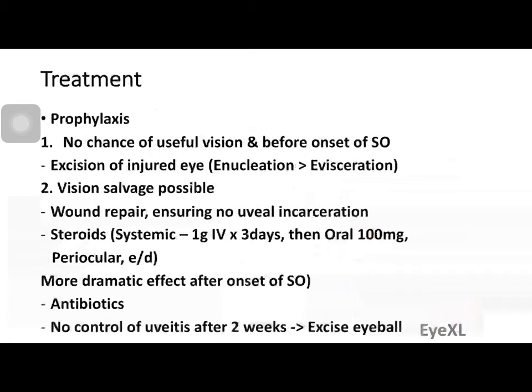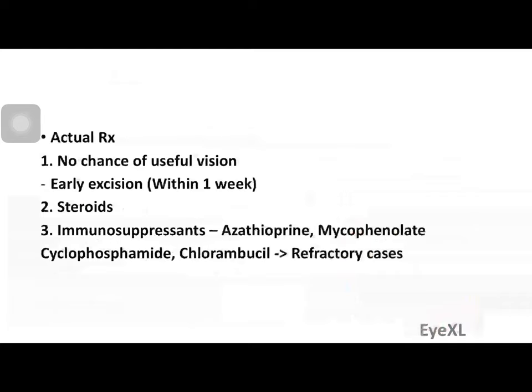If there is no control of uveitis after two weeks, the eyeball must be excised — both eyes are at risk simultaneously. If sympathetic ophthalmitis has already happened, the same question applies: is there any chance of saving vision? If not, excision is performed, preferably within one week of the trauma. Steroids via all routes are administered to reduce inflammation, and immunosuppressants are used either as steroid-sparing agents or when steroids are insufficient — azathioprine and mycophenolate commonly, with cyclophosphamide and chlorambucil reserved for refractory cases.